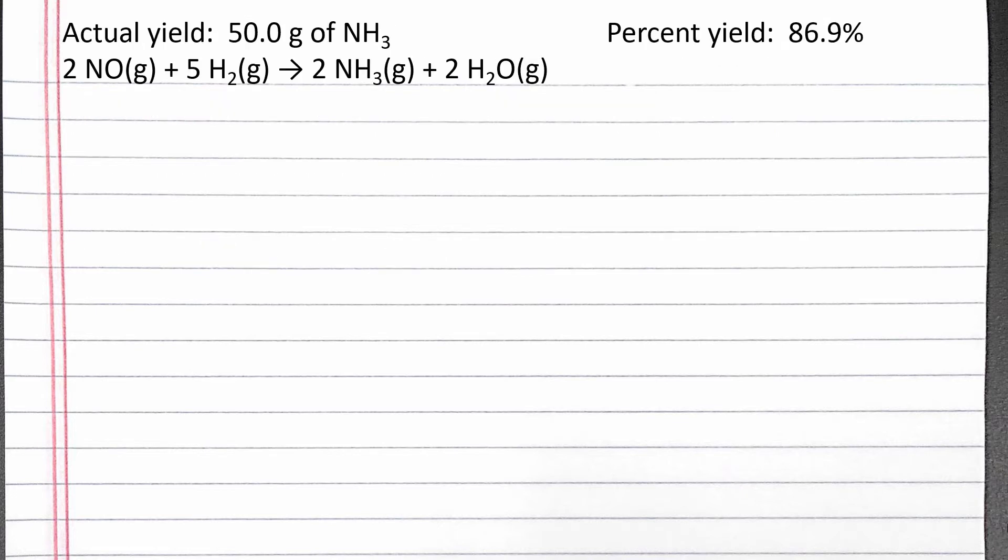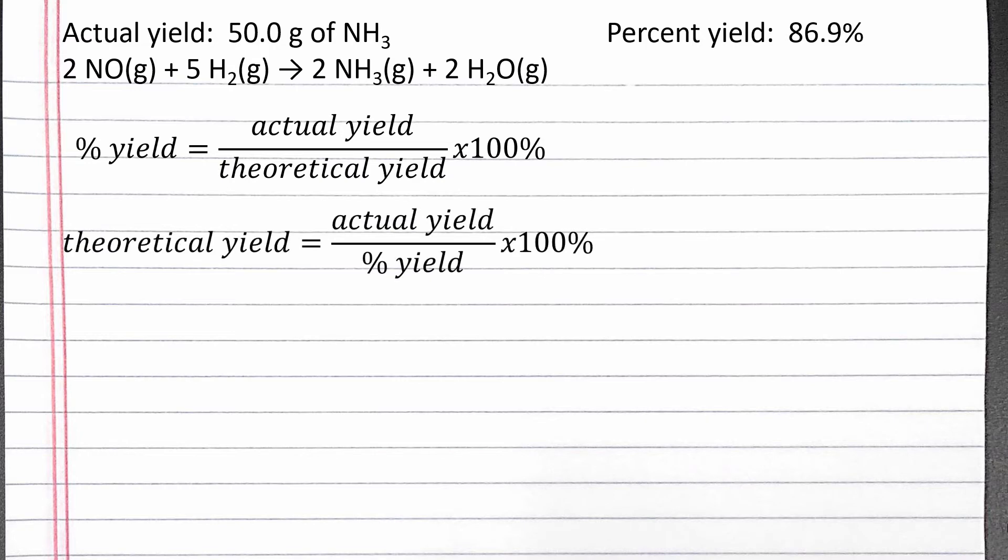To find theoretical yield, we need to rearrange our percent yield equation to solve for theoretical yield. Theoretical yield equals actual yield divided by percent yield times 100%.